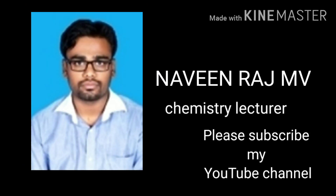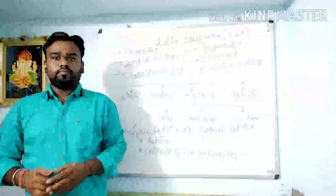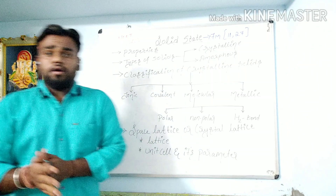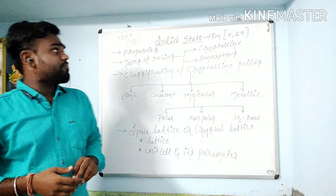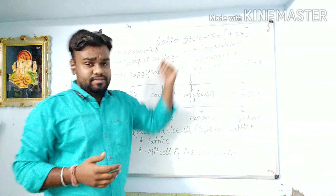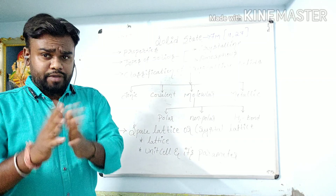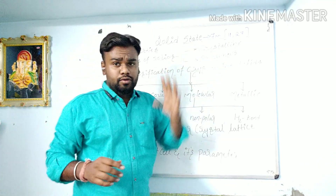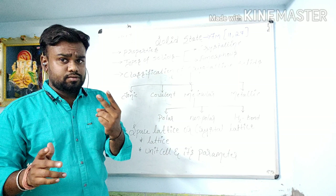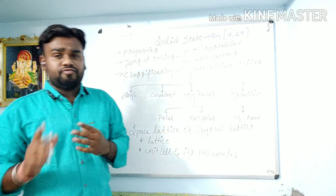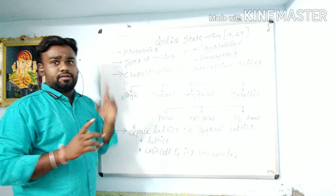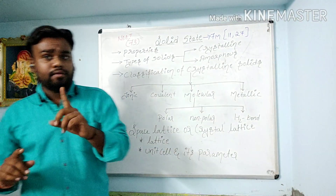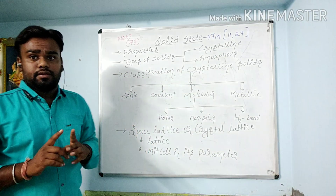Hi, this is Navindraj, Chemistry lecturer. Please subscribe to my YouTube channel. We are discussing Solid State in this chapter. For the view board, it gives seven marks. The seven marks is divided into two types: the 11th question (two marks) and the 27th question (five marks). Every year they ask one question from this chapter — question number 73.